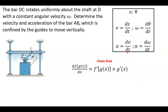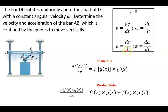The next thing we're going to want to keep in mind is the product rule. The product rule is: if you have the product of two functions and you're taking the derivative, you take the derivative of one multiplied by the other function, plus the first function times the derivative of the second function — f prime of x times g of x, plus f of x times g prime of x.